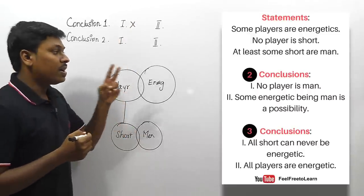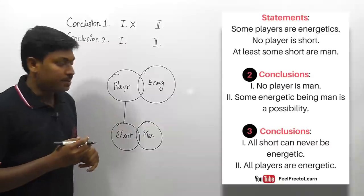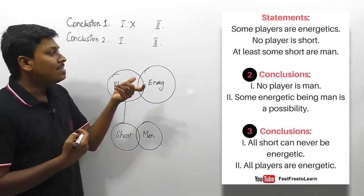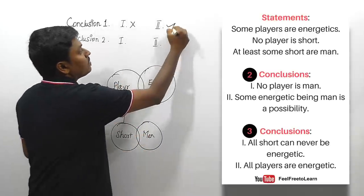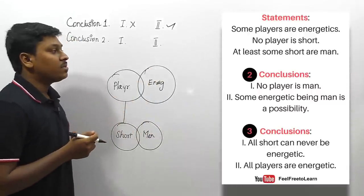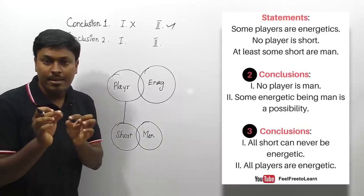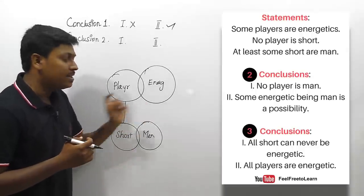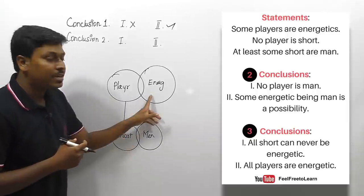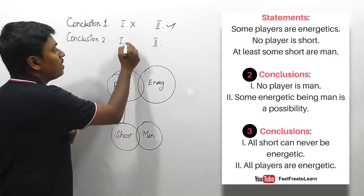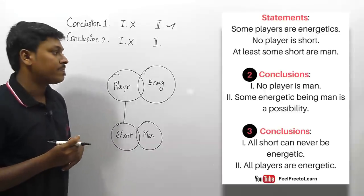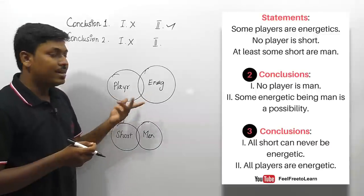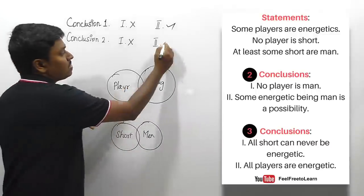Conclusion number two: 'some energetic being man is a possibility' — we know there is a possible connection between men and energetic, so this is exactly possible. For the first set, conclusion two alone follows. For the second set: 'all shorts can never be energetic' — 'can never be' means 'no,' so no short is energetic. But there is a possible connection between short and energetic, so this is wrong. 'All players are energetic' is also wrong since only some players are energetic.